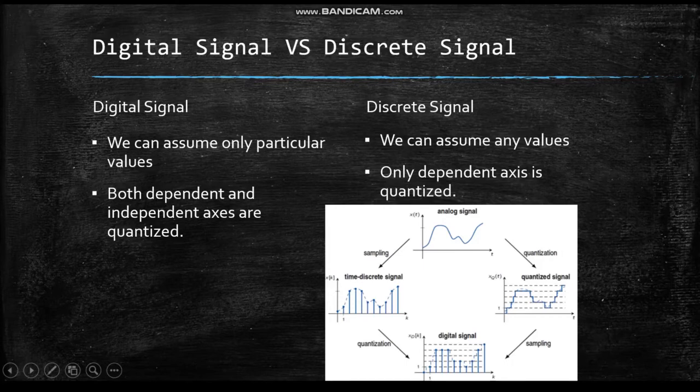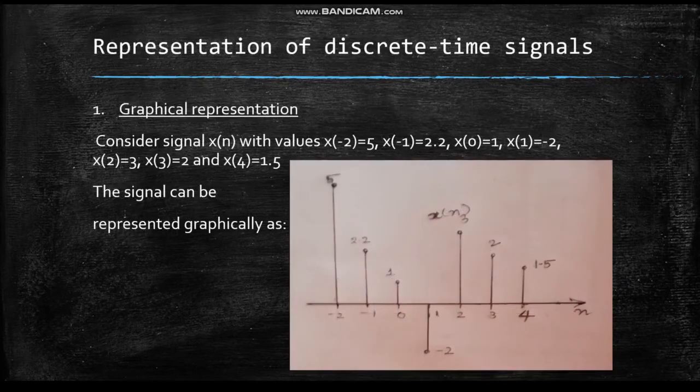An analog signal can be converted into a discrete signal by the process of sampling. Next is the representation of discrete time signals. Discrete time signals can be represented using the following methods, the first being graphical representation.